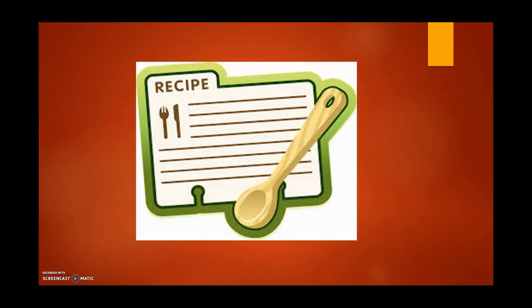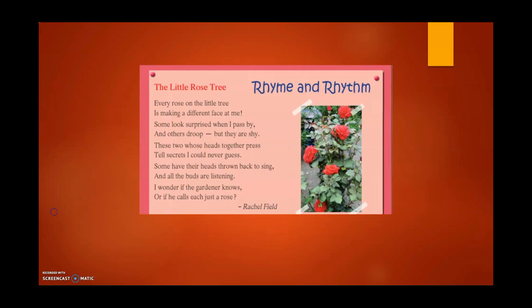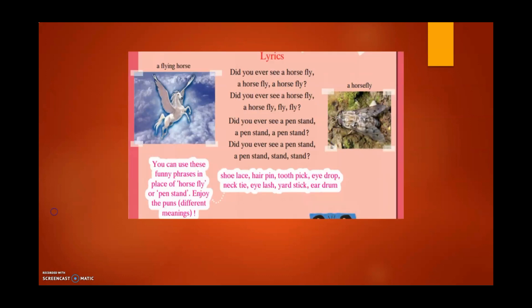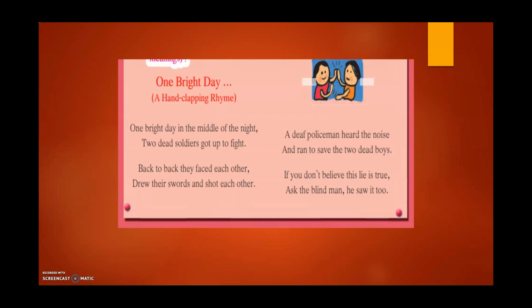Green House is going to write a recipe. You can write a recipe for any food, whether it is a snack or a proper meal made by your mother. And last, Yellow House is going to write a poem. The poem can be one with rhyme and rhyming words, or a fun poem with puns, or an action song where you can sing and do actions.